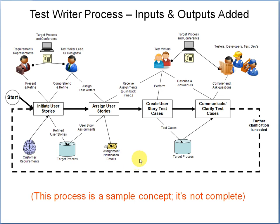So there you have it — a very simple process modeling technique. You've got the process flows, the actors, the tools they're using, and your inputs and outputs. This can be used to design a system, to model an existing process if you're looking to improve it, or to help testers and quality assurance department members understand a system so they can decide how to test it. It really has many uses. You can also drill down — if a box is shown as a 3D box, that indicates there's another diagram that represents that particular activity broken out into its individual steps.